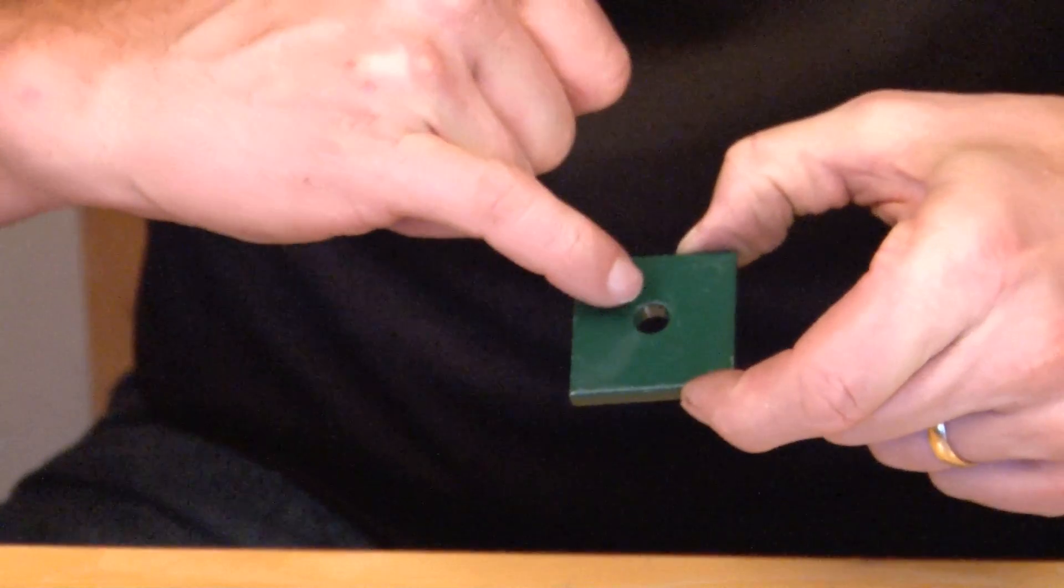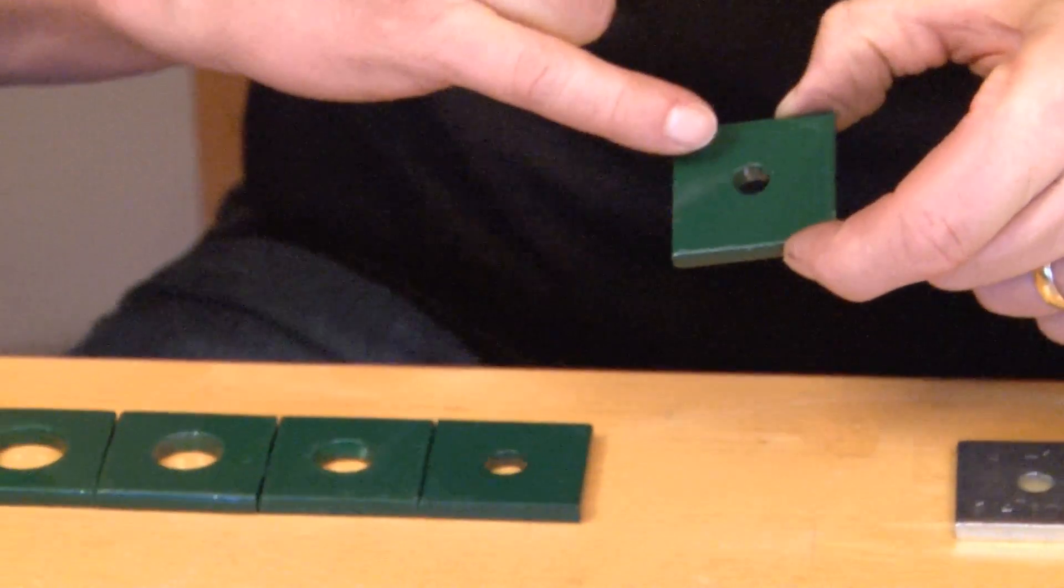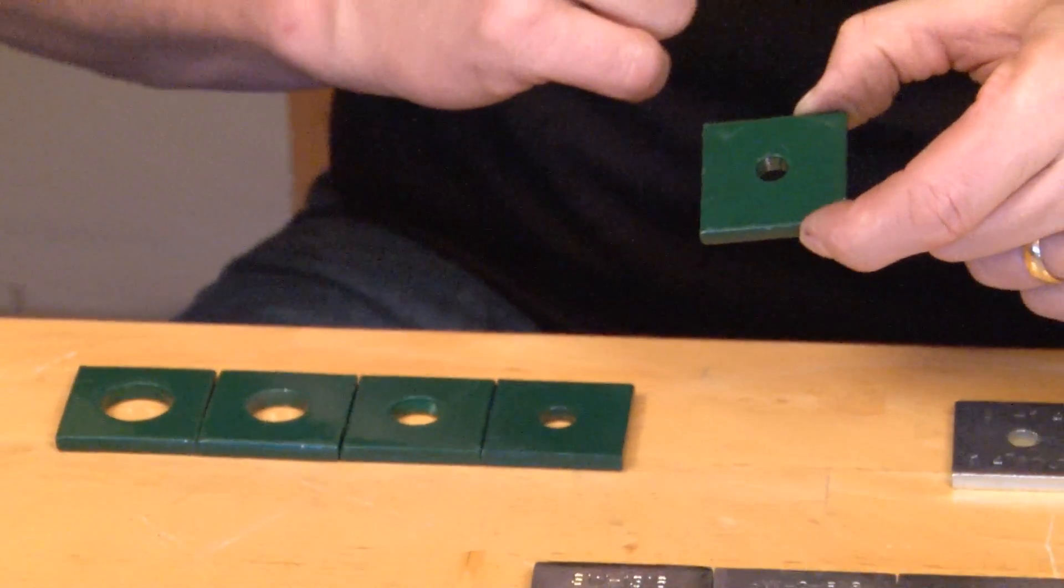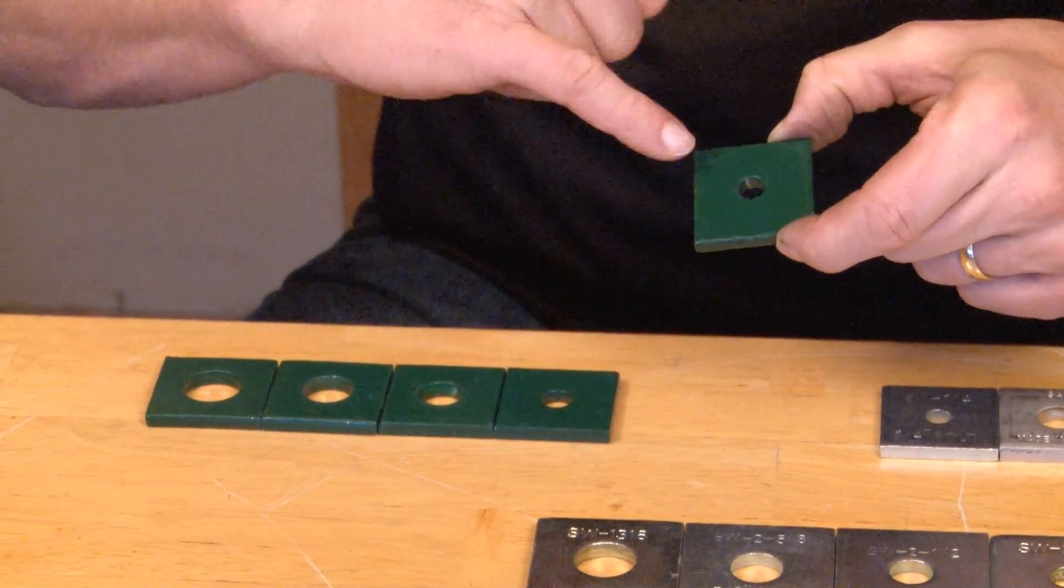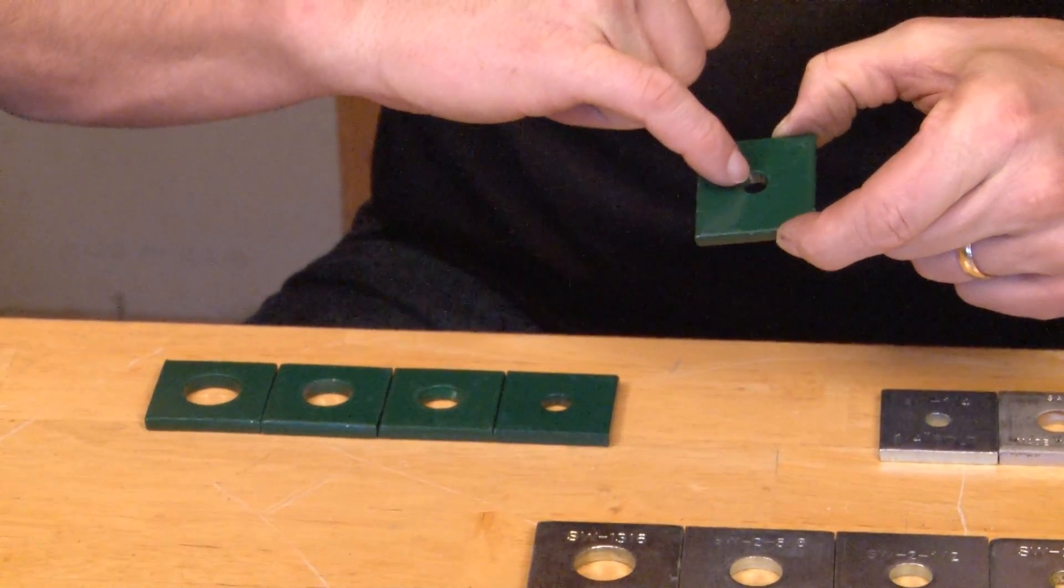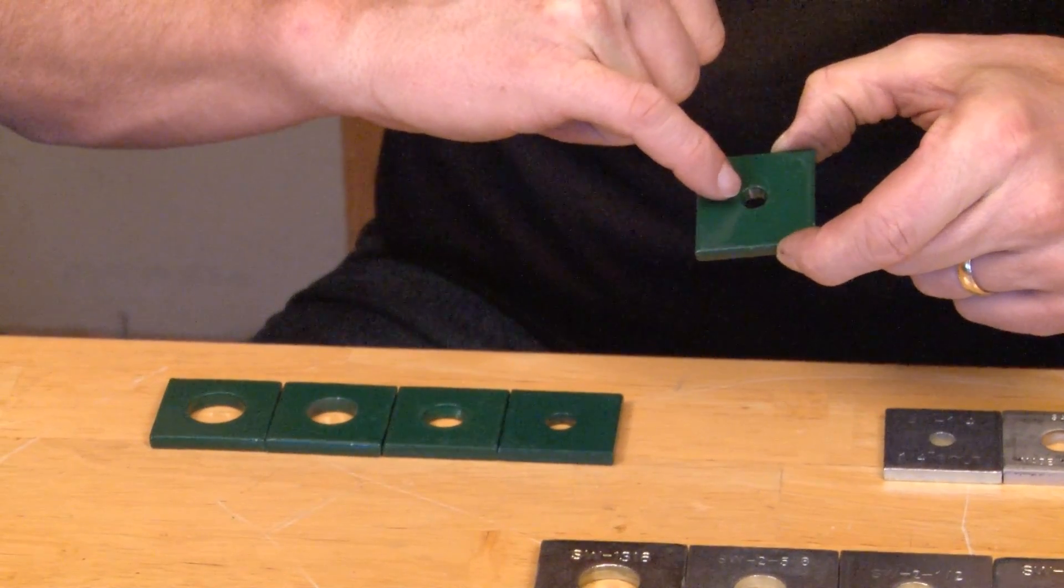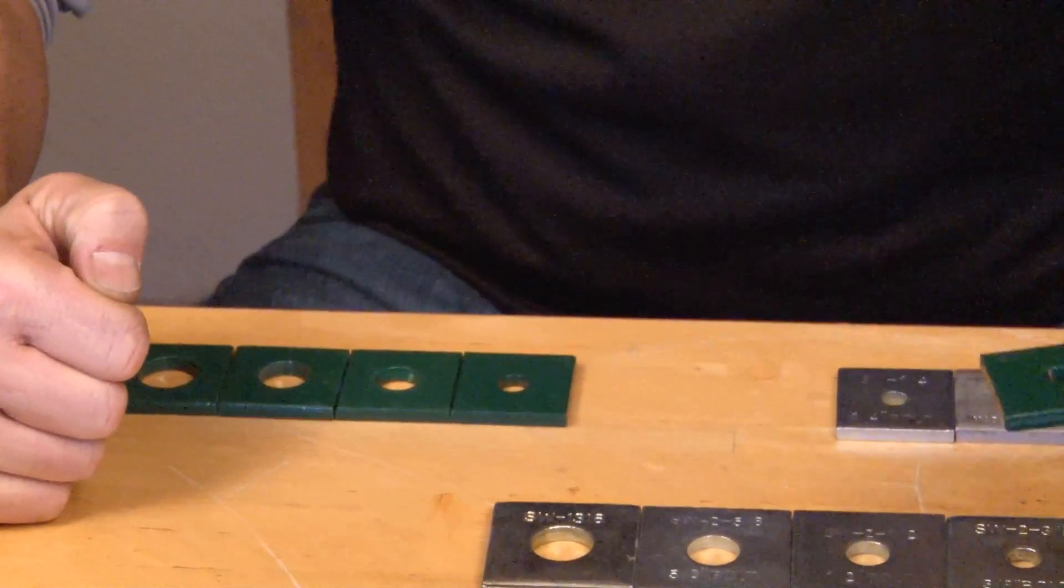They come with a variety of center holes to match up with threaded rod and fasteners for appliances that are fastened to strut channel. Now, this particular model SW quarter G is for quarter inch drop rod.